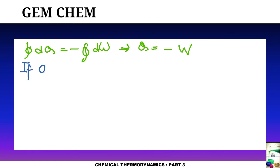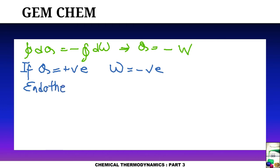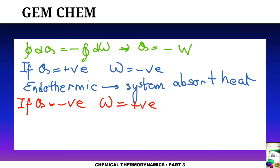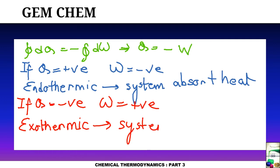If q is positive then w will be negative — this corresponds to an endothermic process, where the system absorbs heat. If q is negative then w will be positive and the process will be exothermic, where the system releases heat.